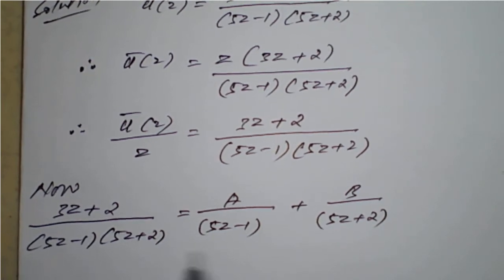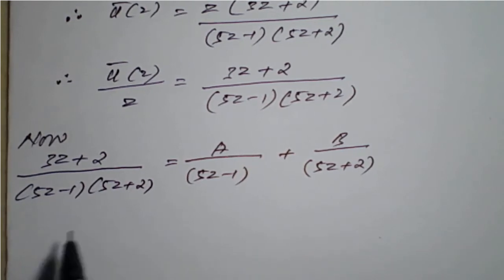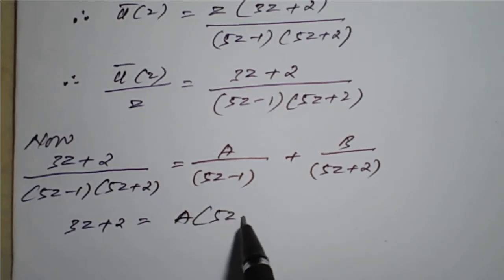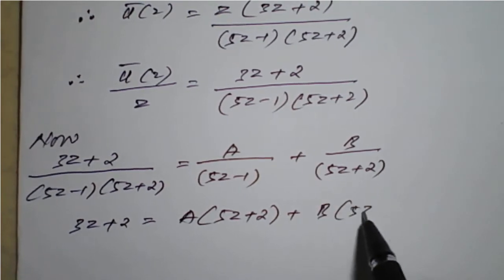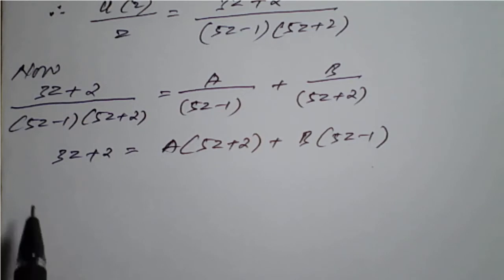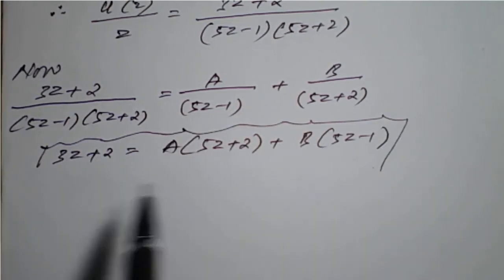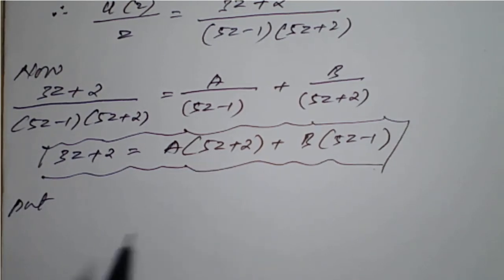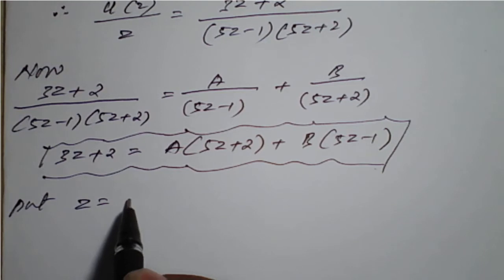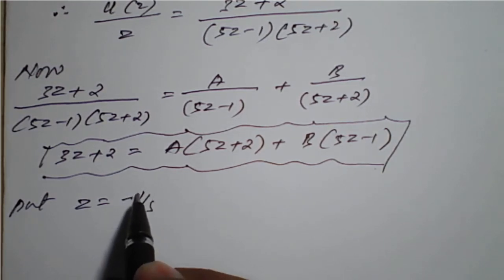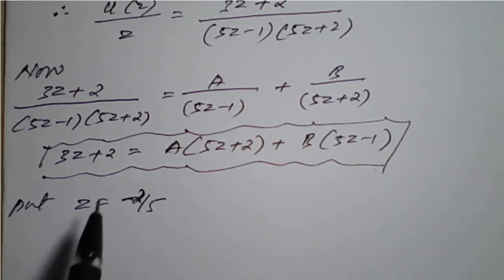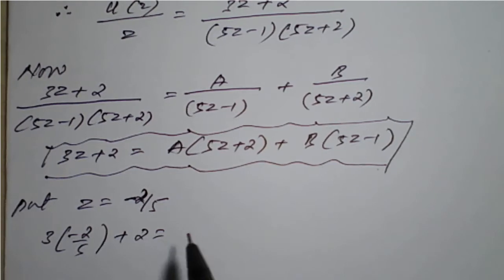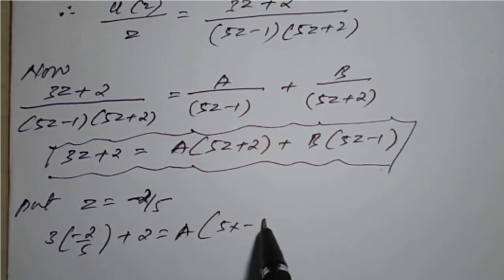Taking LCM on both sides and canceling denominators, we get 3z + 2 = A(5z + 2) + B(5z - 1). Now we need to simplify this equation to find the values of A and B. To eliminate A, put z = -2/5 on both sides.